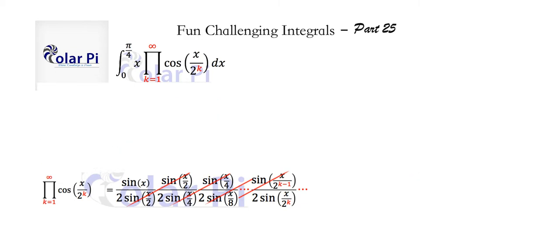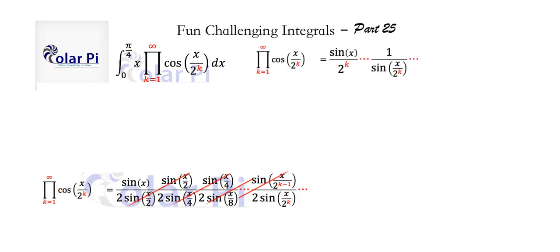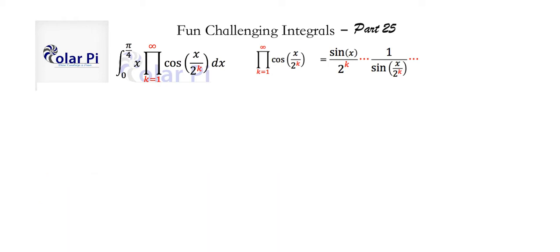So our infinite product is reduced to sine x divided by 2 to the k times sine of x divided by 2 to the k, with the dot dot dot. Saying that the crossing out process goes on forever is the same thing as taking the limit as k goes to infinity of this expression.